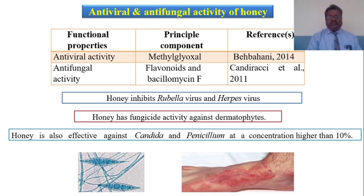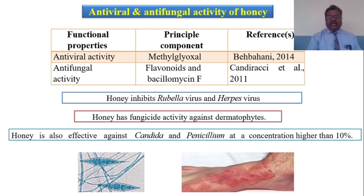Another property of honey is antiviral and antifungal activity. Antiviral activity is due to the presence of methylglyoxal, while antifungal activity is due to flavonoids and defensin-1. Honey especially inhibits the growth of rubella virus and herpes virus, and has fungicidal activity against dermatophytes. Honey is also effective against Candida and Penicillium at concentrations higher than 10%.